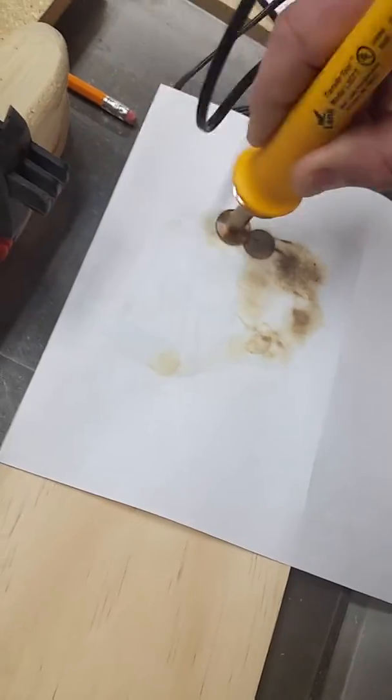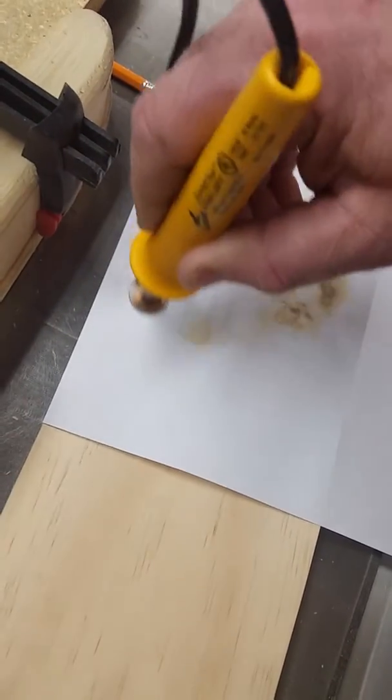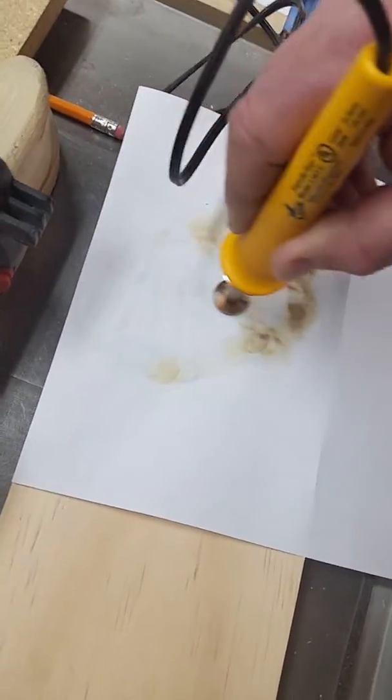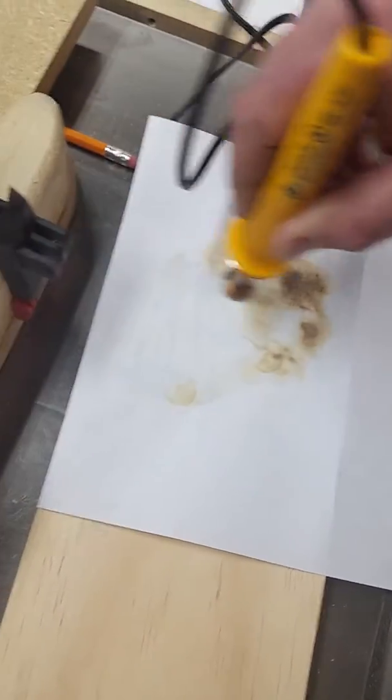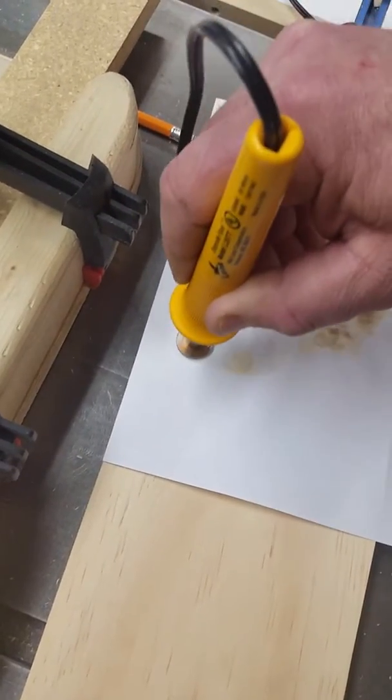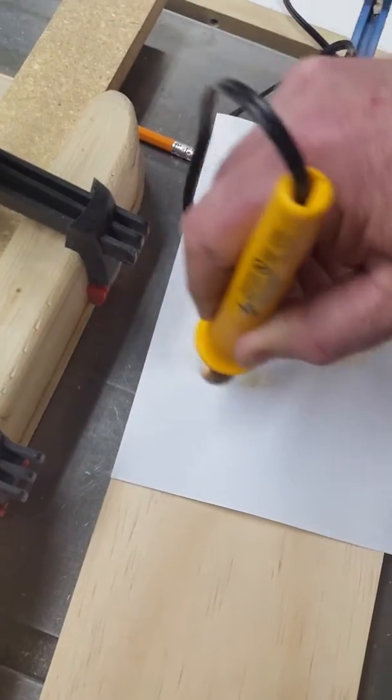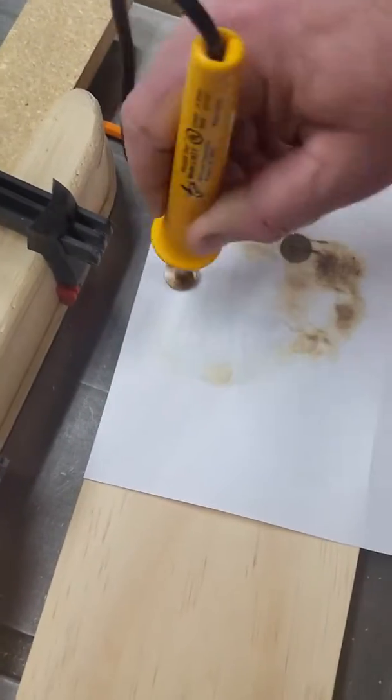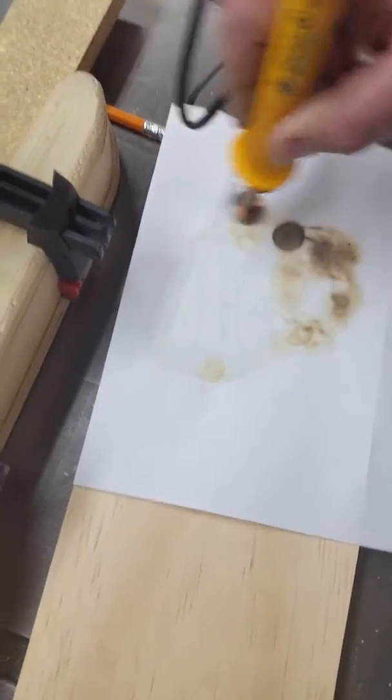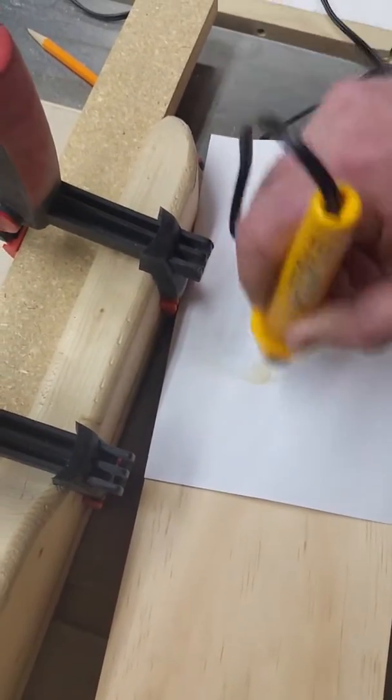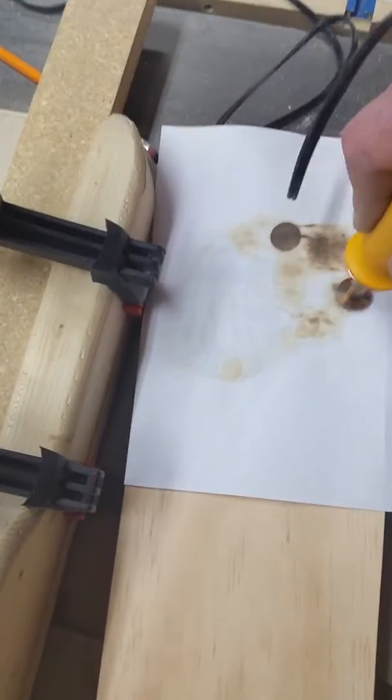I don't know if you can see it on the camera or not, but as I'm transferring the lines, you can kind of see a little bit of a reflection in the paper as it's being transferred to the wood. It only takes a few minutes, but it does work good.